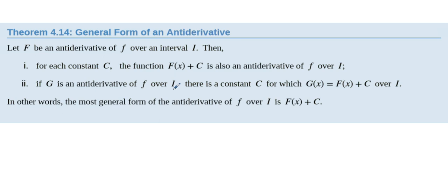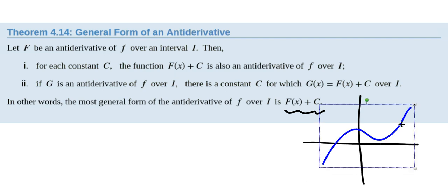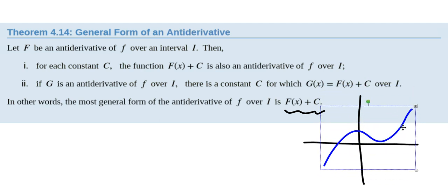If capital G is some antiderivative of little f, then there is a constant for which capital G is capital F plus that constant over the interval. In other words, the most general form of the antiderivative over any interval is capital F plus a constant. The plus C just refers to a vertical shift. So if capital F looks like this, then moving capital F up and down doesn't affect the slopes at all, it just affects the vertical placement. So the plus C is necessary because it refers to a family of functions all of whose derivatives are the same.